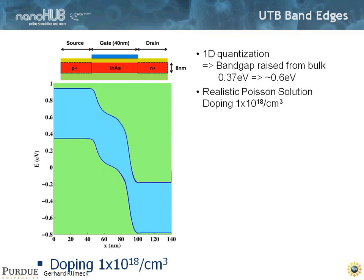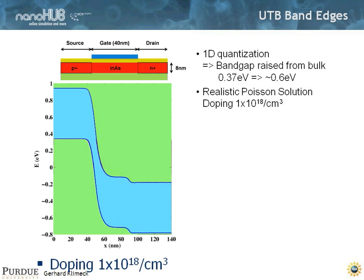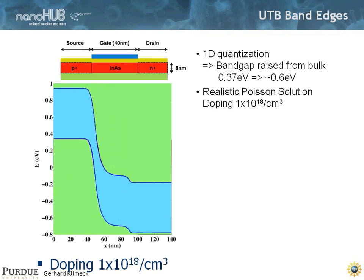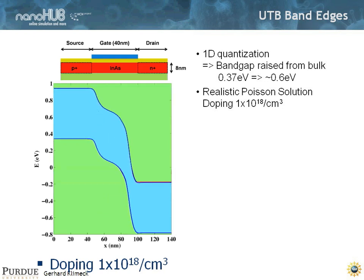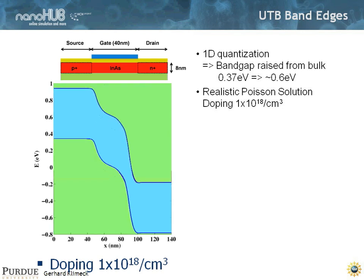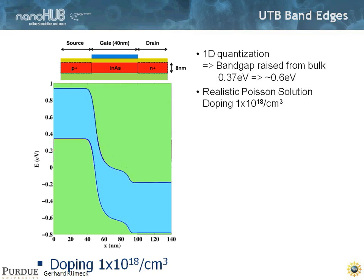You notice that the band gap has been raised from the bulk value of 0.37 eV to roughly 0.6 eV. That is due to quantization of the indium arsenide. You take indium arsenide, make a quantum well, you create particles in a box, you raise the gap. So the band gap got bigger from 0.4 to 0.6 ballpark, and that is automatically included in the tight binding model.